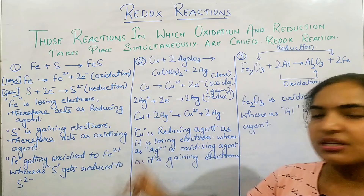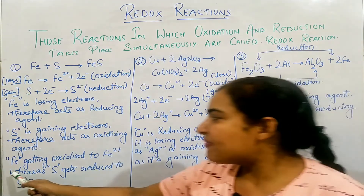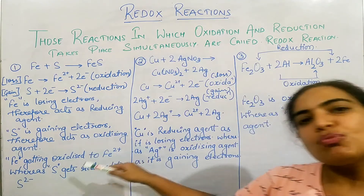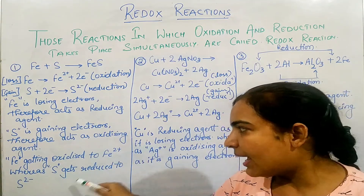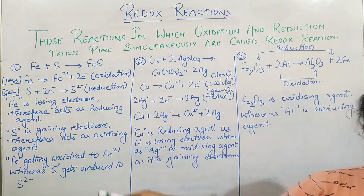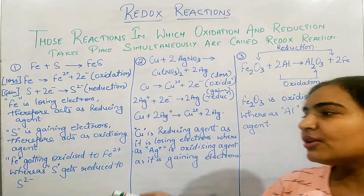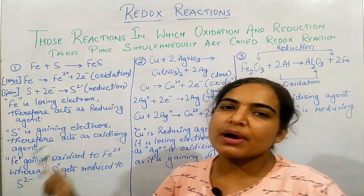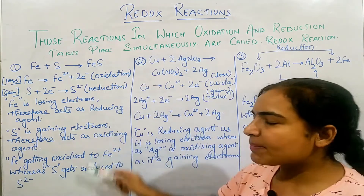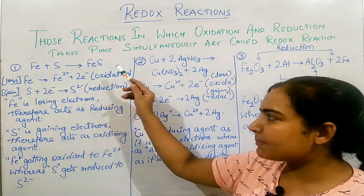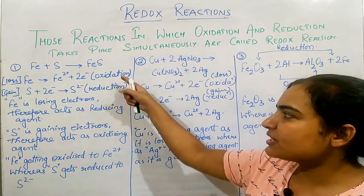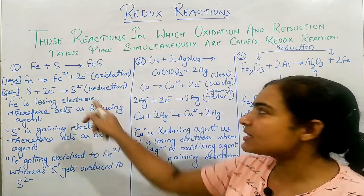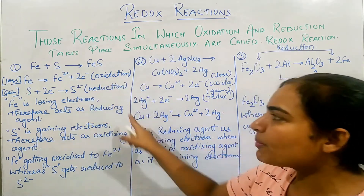So Fe is getting oxidized to Fe²⁺, whereas S gets reduced to S²⁻. This is a very small example covering four topics: oxidation, reduction, reducing agent, and oxidizing agent — all covered in this single equation.